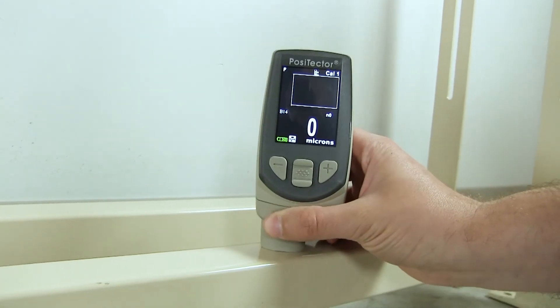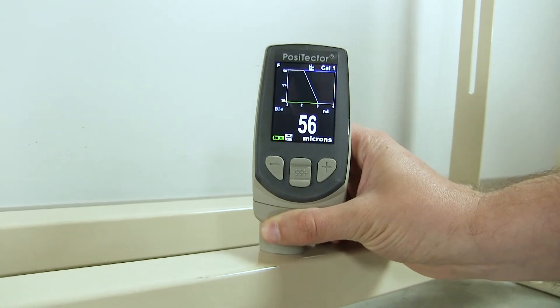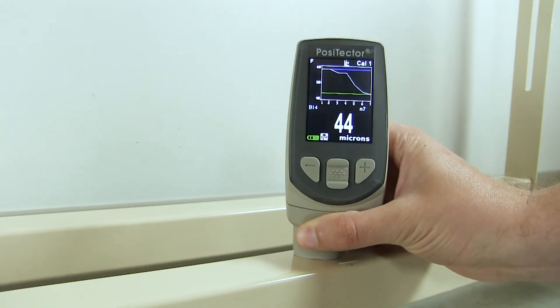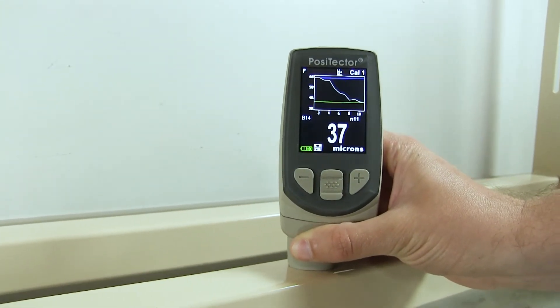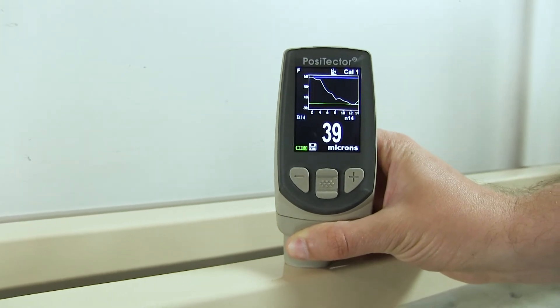In all scan modes, the probe measures continuously when placed on the surface, quickly identifying areas of thin or excessive coating coverage that might be missed using spot checks.